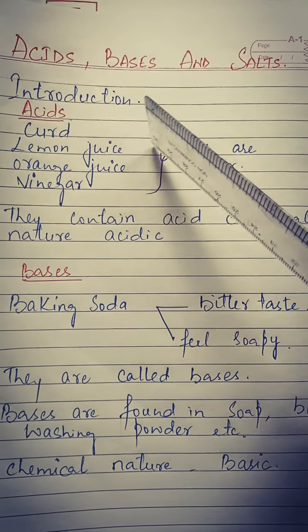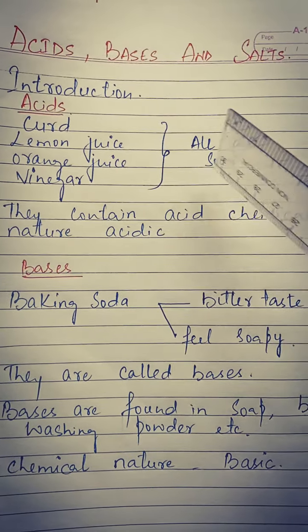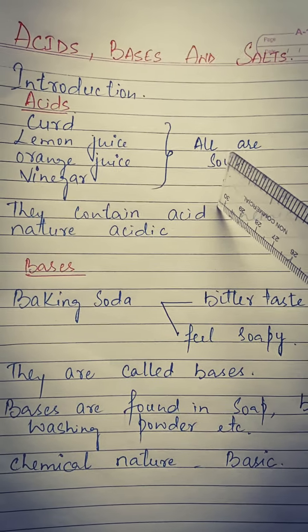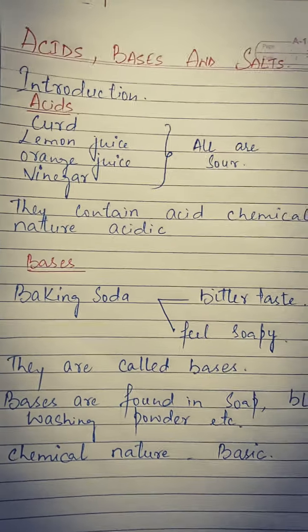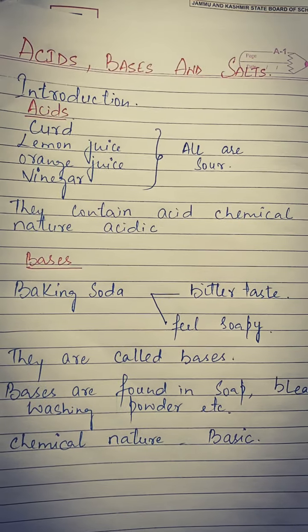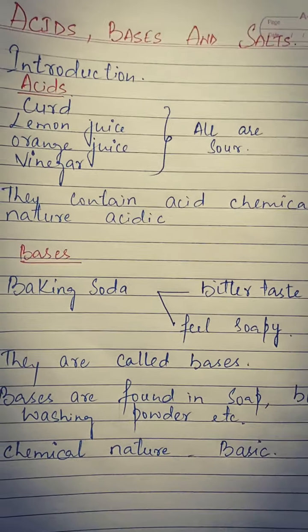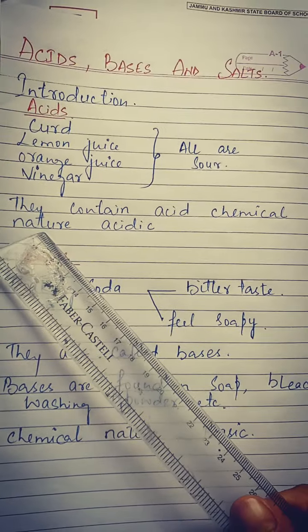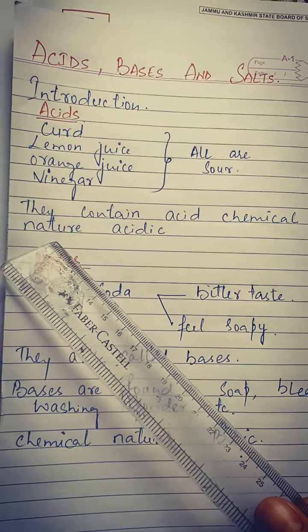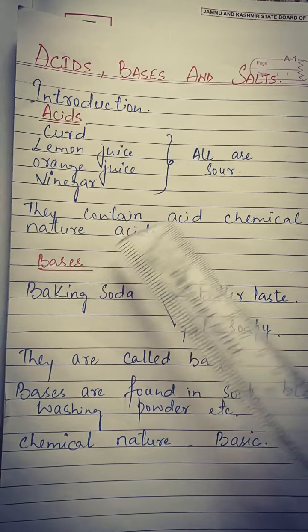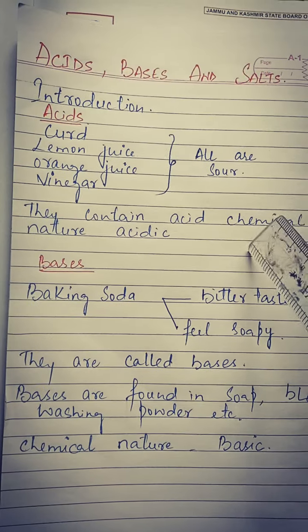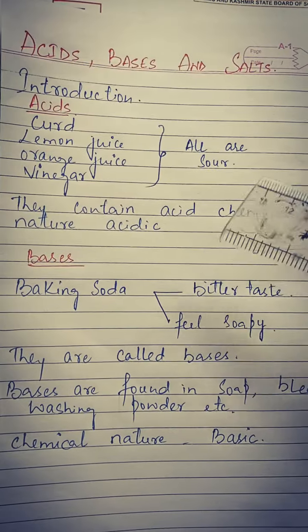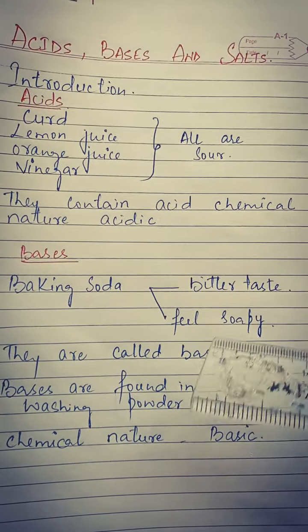अब इन सब चीजों में एक common property है — कि इन सब का taste क्या होता है? खट्टा होता है, यानि कि ये खट्टे होते हैं। तो सबसे पहले हमें ये चीज पता चली कि acids का टेस्ट खट्टा होता है। जो चीज खट्टे टेस्ट की होगी, we will say that उस चीज में acid present है। और इनका जो chemical nature होता है, acids का chemical nature acidic होता है — so the answer is acidic.